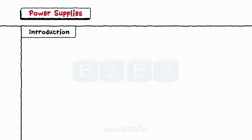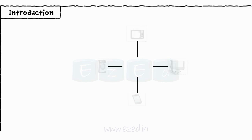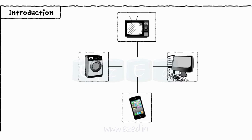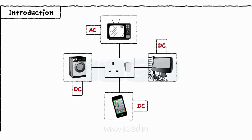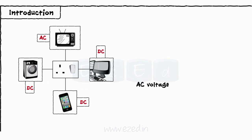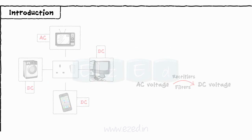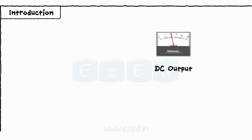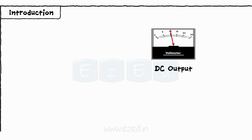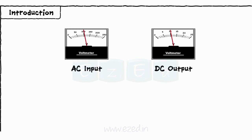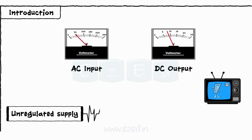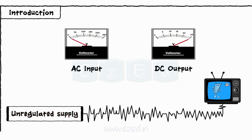Let's start with the introduction to power supplies. Every electronic device needs some sort of power supply for its working. For most devices, this supply is in the form of DC voltage. Thus, we convert AC voltage into DC voltage with the help of rectifiers and filters. Even though the output produced is a DC signal, it varies with variations in the AC signal. This type of signal is called an unregulated supply and may damage the device.